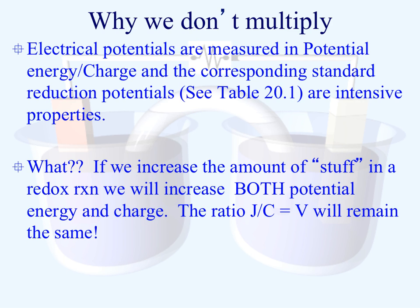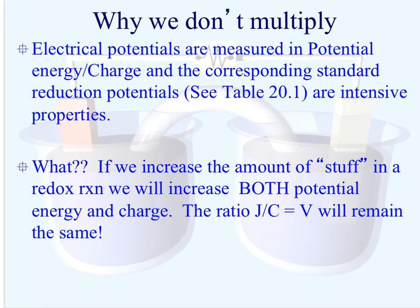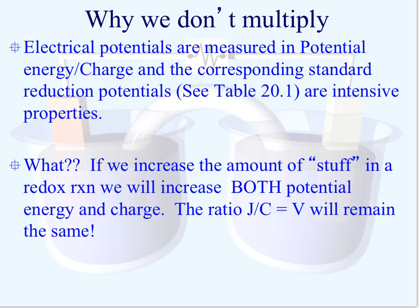Now let's talk about why we don't multiply the values for our reduction potentials when we multiply through to balance electrons. Electrical potentials are measured in potential energy per charge. When you increase the amount of substance by multiplying through, you increase both the potential energy and the charge at the same time, so the ratio between energy and charge remains the same — the voltage doesn't change. Because that ratio stays constant, you don't need to multiply the cell potential value.